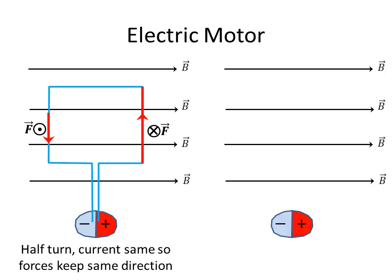So what we have then is an electric motor. If we look carefully at this, we'll see that as this spins around, the loop keeps going. So we have our electric motor.